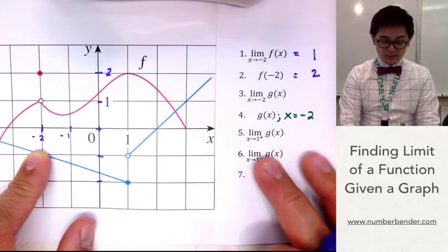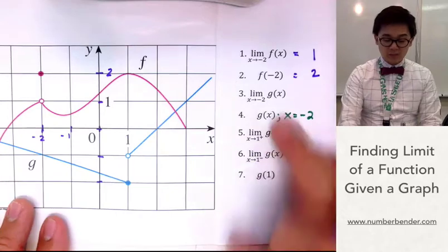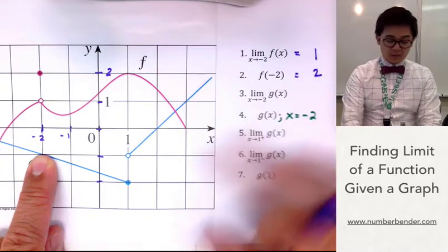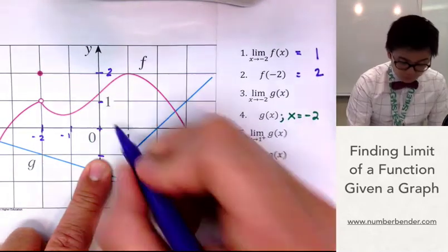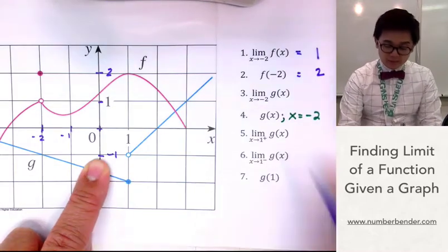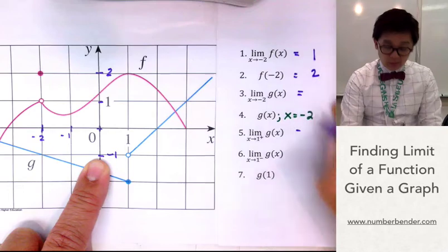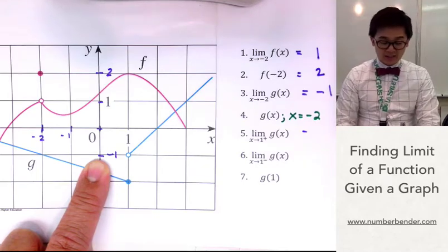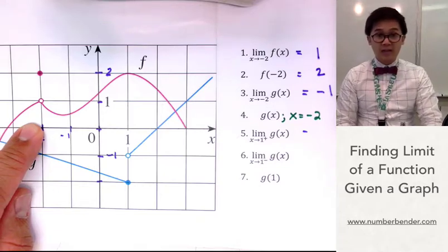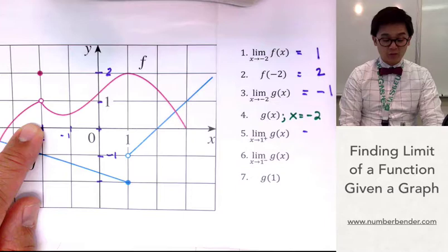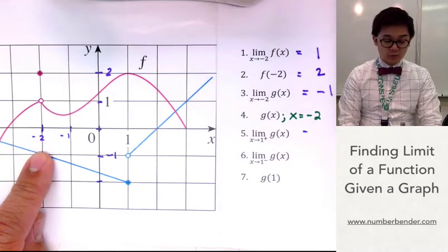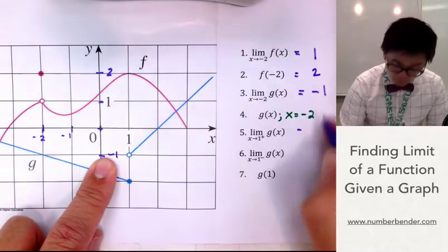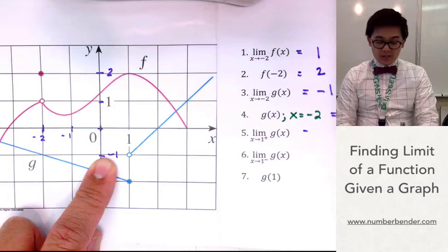For number 3, it's a limit again at x equal to negative 2, but this time the function is g of x. We ignore the pink graph and focus on the blue graph. From the right and from the left, the blue graph is approaching the same value of y, which is equal to negative 1. So number 3 is negative 1. For problem 4, g of x at exactly x equal to negative 2 is also negative 1, because there is no hole there — it exists.